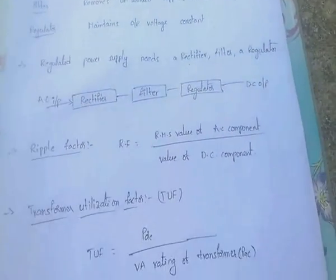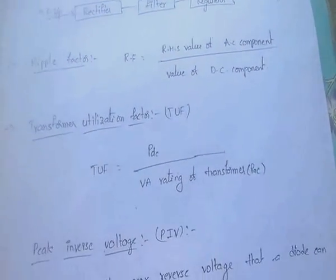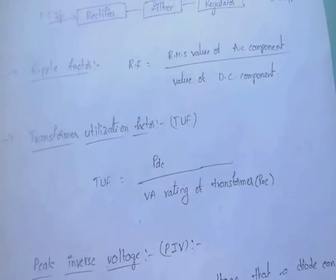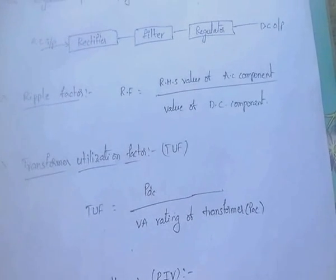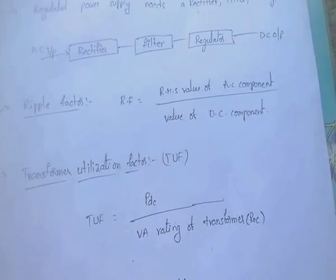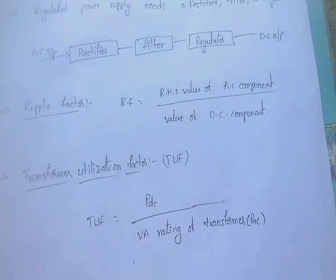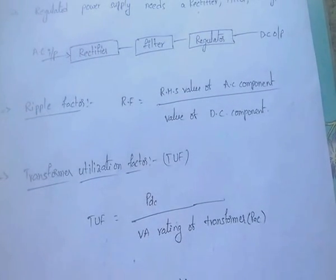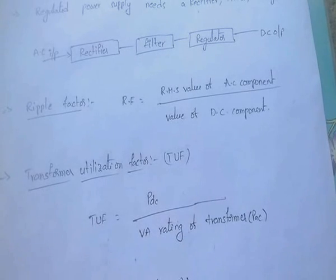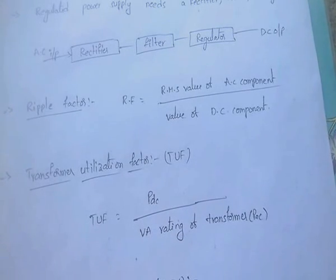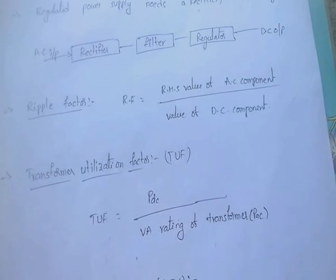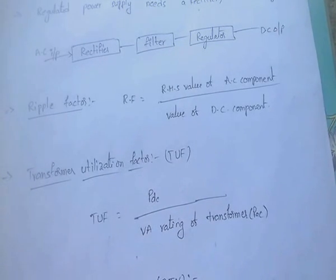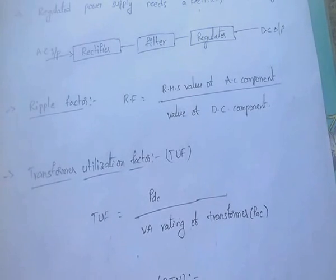Ripple factor is a very important term. Ripple factor equals the RMS value of the AC component divided by the value of the DC component.